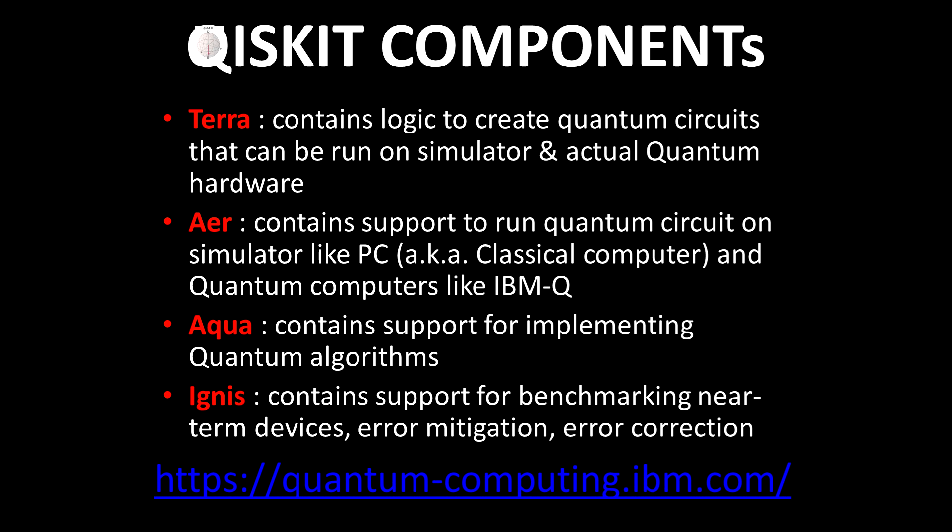Aer helps us run whatever quantum program or circuit we write. Qiskit provides two ways to execute our programs: the first is simulation — meaning you can run your quantum program on your classical computer with behavior and responses that closely mimic a quantum computer. Once you are satisfied with that, you can then hit the actual quantum hardware and run your circuit there. Ignis is something we'll need later, but in the beginning we will only be using Terra and Aer.